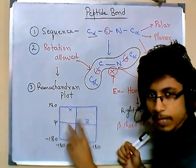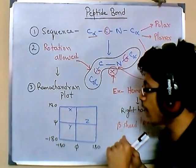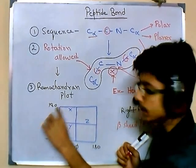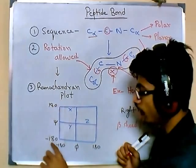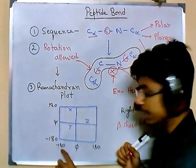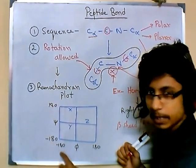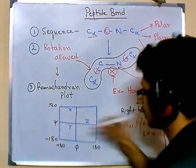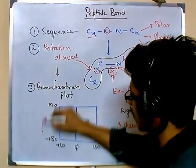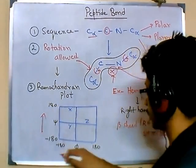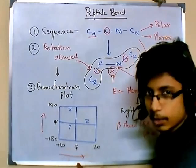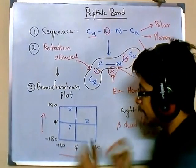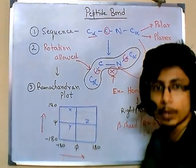In the Ramachandran plot, there are four quadrants. The axes run from minus 180 degrees to plus 180 degrees — minus 180 at the bottom and plus 180 at the top on the vertical axis, and minus 180 to plus 180 on the horizontal axis.